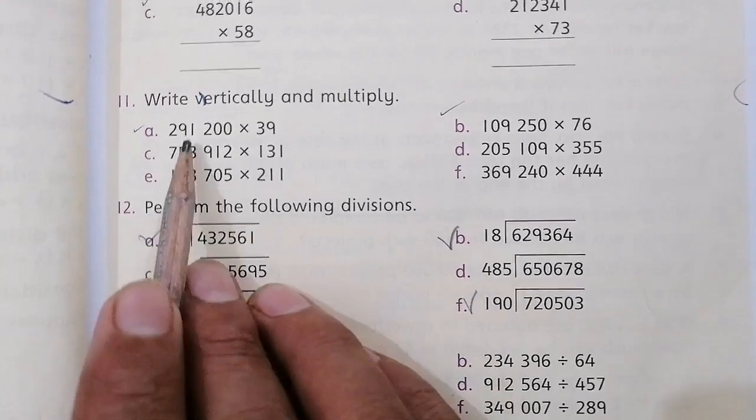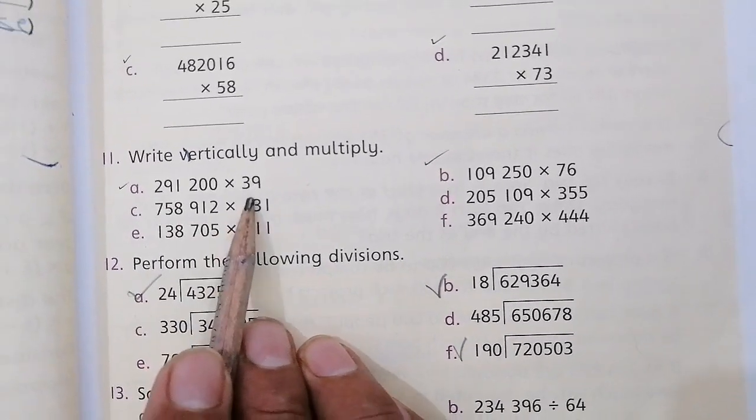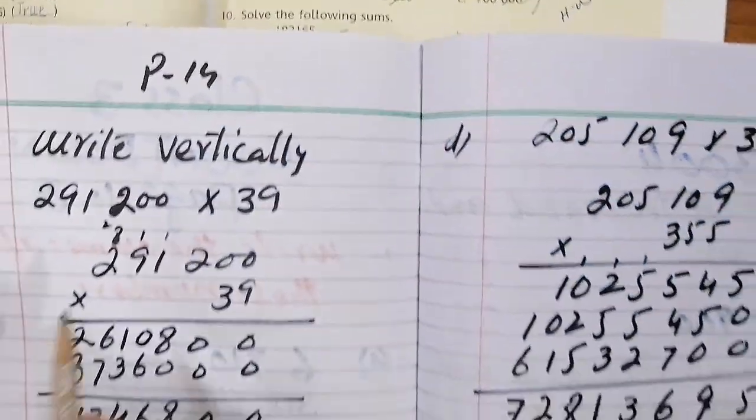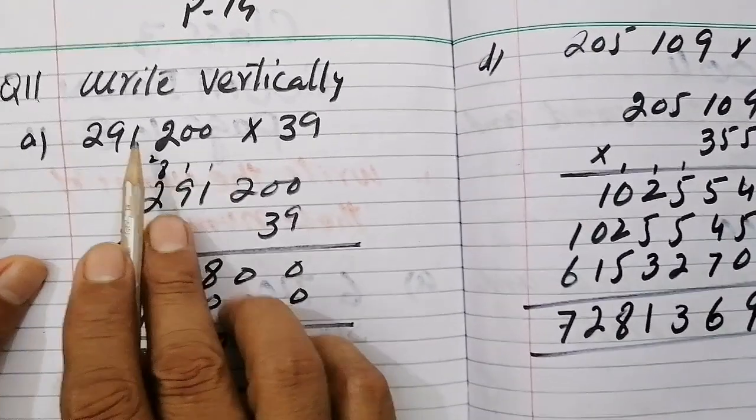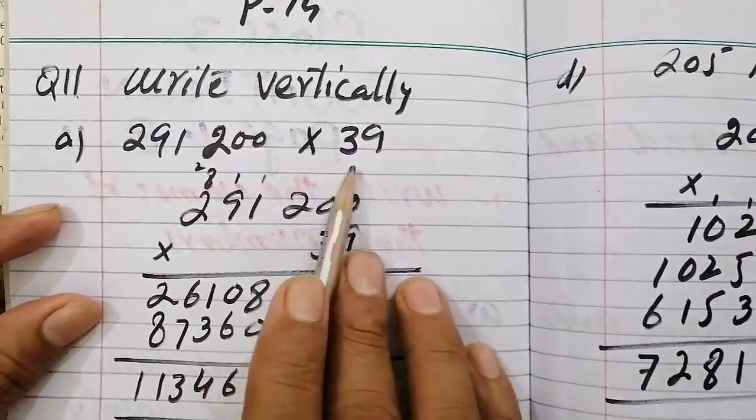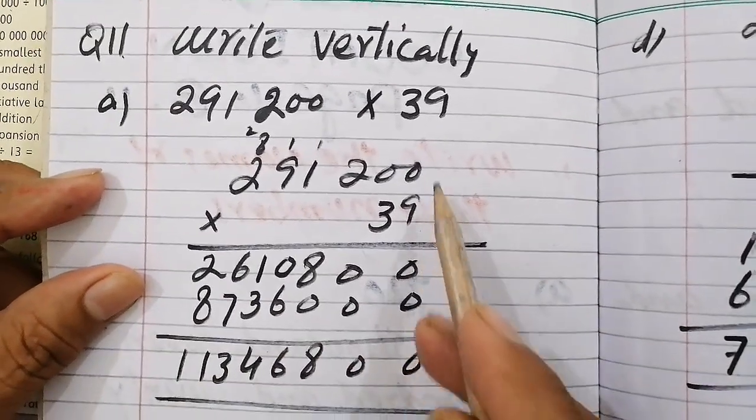So the first part A is 291,200 multiply 39. So this is what I have done for you. 291,200 multiply 39. So now we have taken this method vertically. This method is vertical.